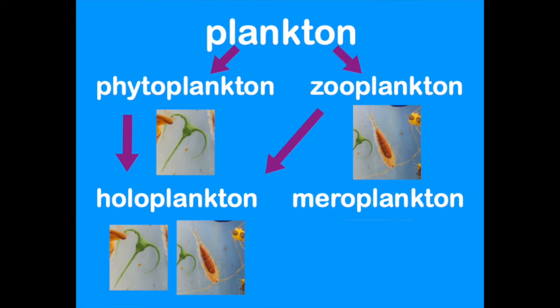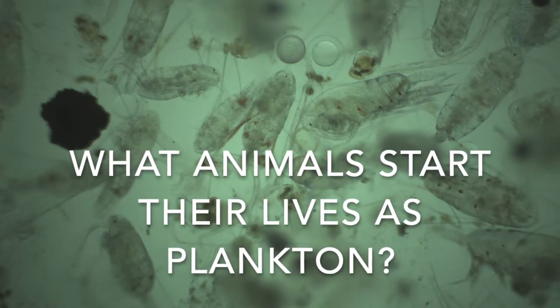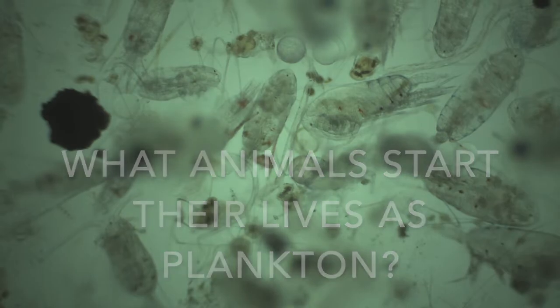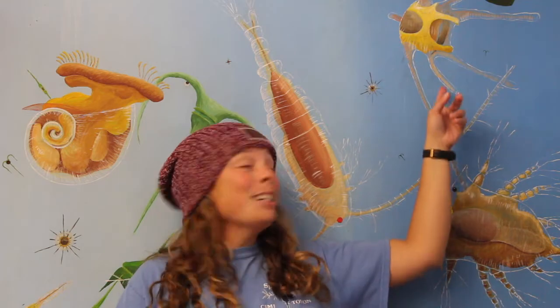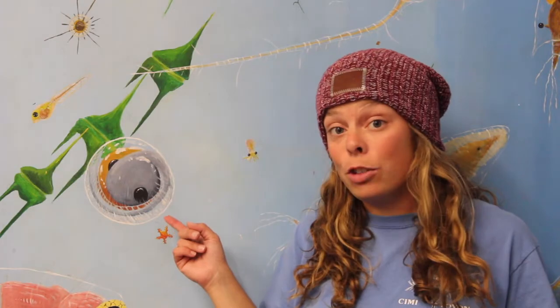Can you think of an animal that might start its life as a drifting plankton? All kinds of marine invertebrates, like barnacles, brittle stars, and snails, all start off as plankton. Many fish start off as plankton as well. Most fish start off their lives in eggs drifting around in the ocean, and even after they hatch, the tiny larvae are still considered plankton until they grow into stronger swimmers.